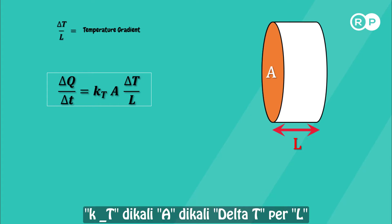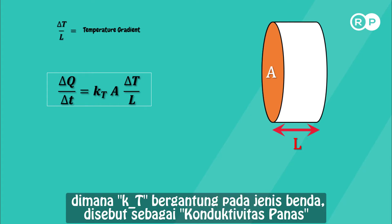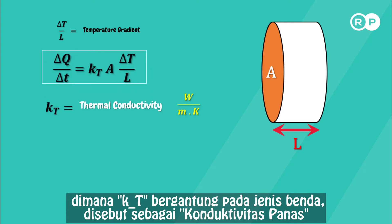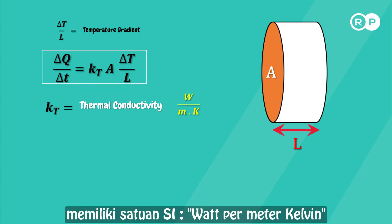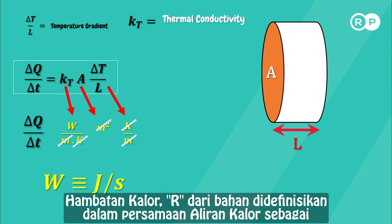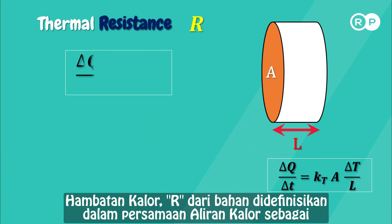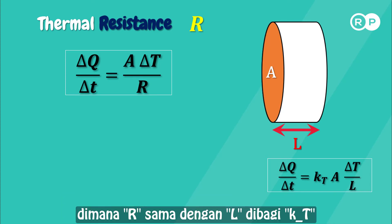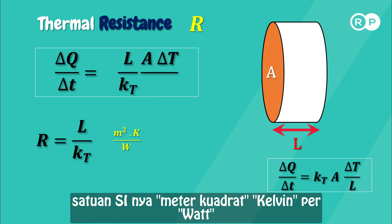The quantity of heat ΔQ transmitted from face one to face two in time Δt is given by: ΔQ/Δt = KT × A × ΔT / L, where KT depends on the material of the slab and is called the thermal conductivity. In SI units, KT has units of watts per meter-kelvin, and ΔQ/Δt is in joules per second. The thermal resistance or R-value of a slab is defined by ΔQ/Δt = A × ΔT / R, where R = L / KT, with units of meter-squared kelvin per watt.